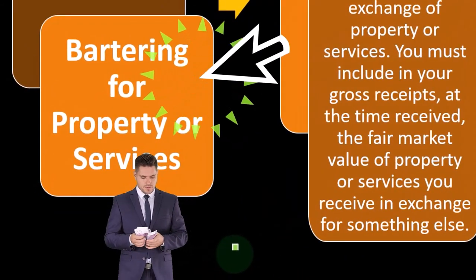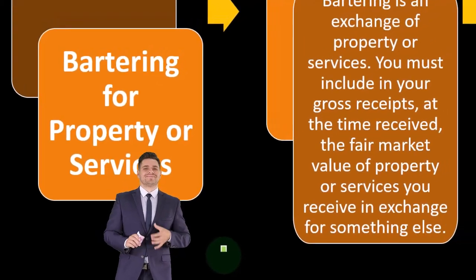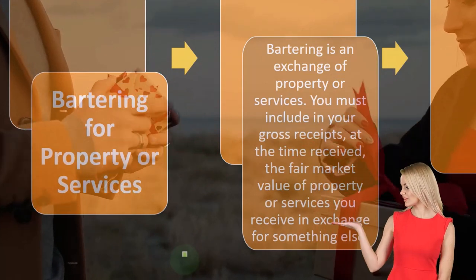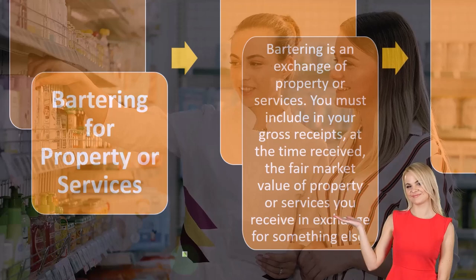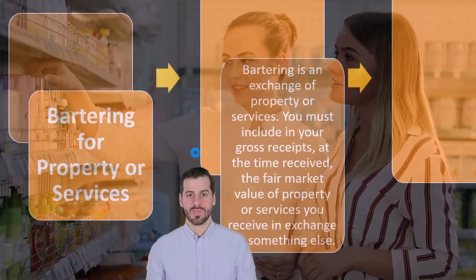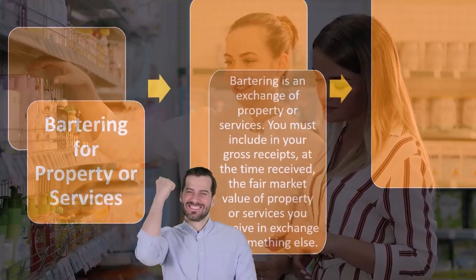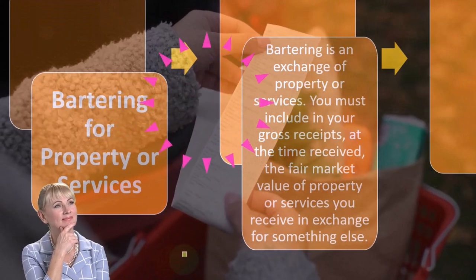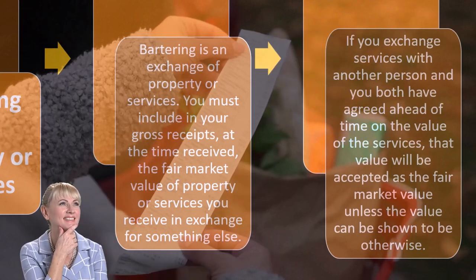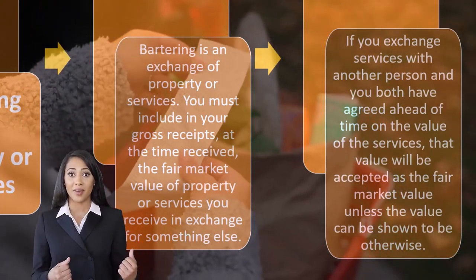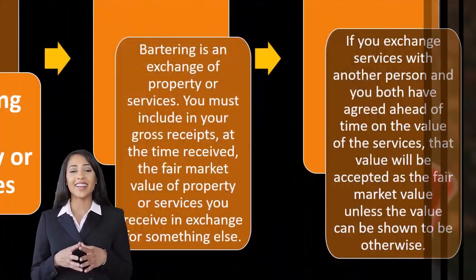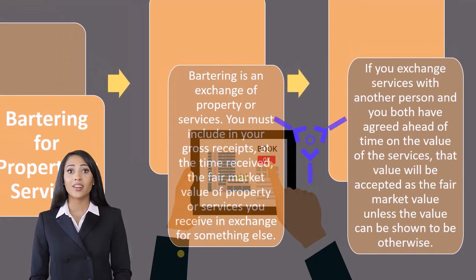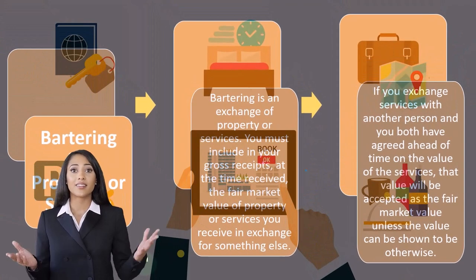Bartering — you can do a barter chain, trading for property or services. Bartering is an exchange of property or services. For example, I do a service for you, like provide meals at a restaurant, and you do a service for me — we barter, we trade, we don't use cash. You still have revenue generation. You must include in your gross receipts, at the time received, the fair market value of property or services received in exchange. If you both agree ahead of time on the value of the services, that value will be accepted as the fair market value unless shown otherwise.